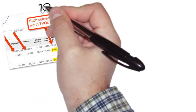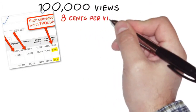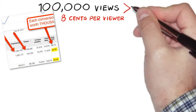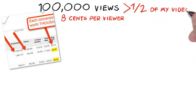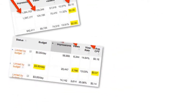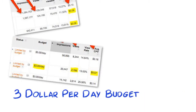As you can see, this campaign is getting well over 100,000 views and only costing 8 cents per viewer, who then goes on to watch more than half of my video. And this one is only running on a $3 per day daily budget and still getting thousands of views and only costing 7 cents per viewer.